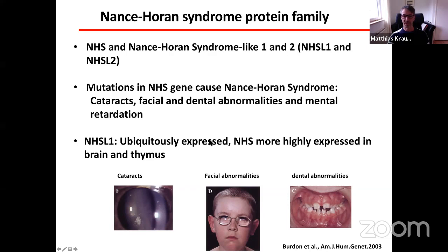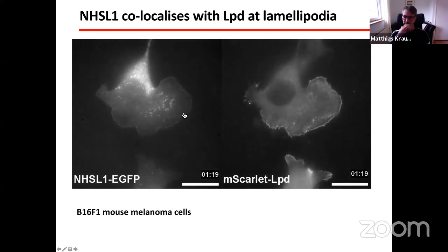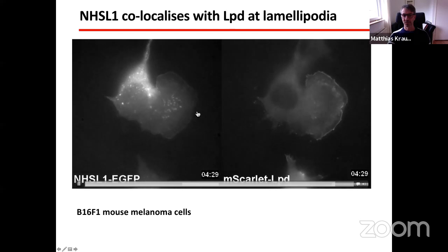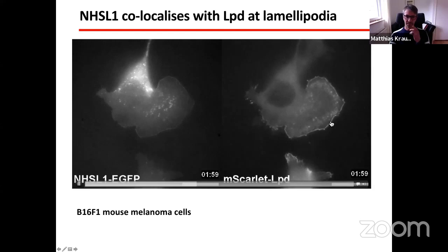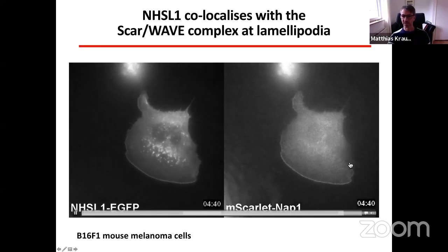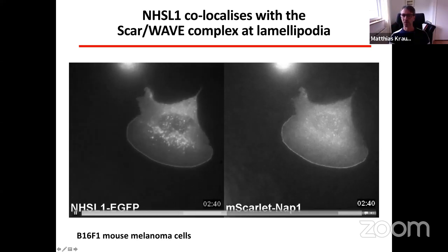So what is NHS-like 1? It belongs to the poorly characterized Nance-Horan syndrome protein family, which comprises NHS, NHS-like 1, and NHS-like 2. Mutations in the NHS gene cause Nance-Horan syndrome, characterized by cataracts, facial abnormalities, dental abnormalities, and mental retardation. NHS is more highly expressed in brain and thymus, but NHS-like 1 is ubiquitously expressed. Both NHS-like 1 and lamellipodin localize during lamellipodia protrusion to the very edge, and we also observe that NHS-like 1 co-localizes with the SCAR/WAVE complex at the very edge during protrusion.